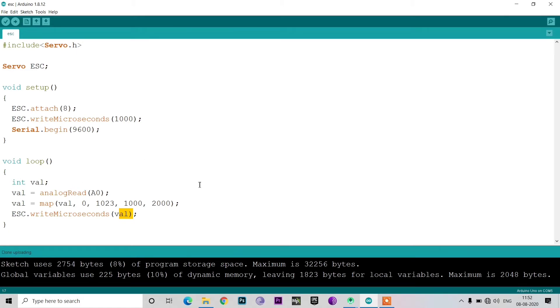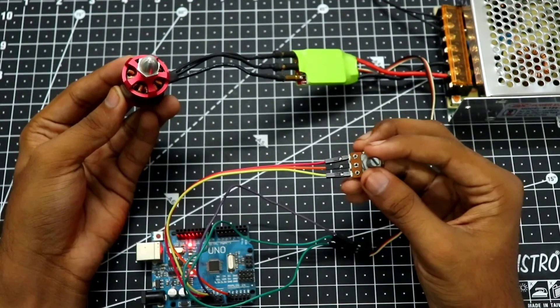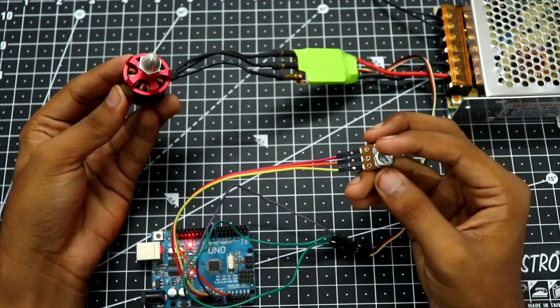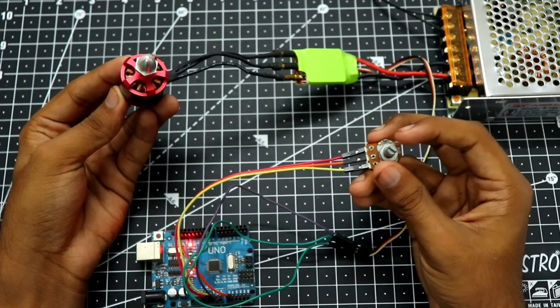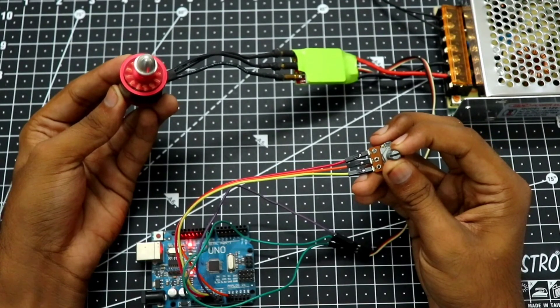And now it's done uploading. Once the code is uploaded, the motor should start to work right away. You just turn the knob on this potentiometer to increase or decrease the speed.